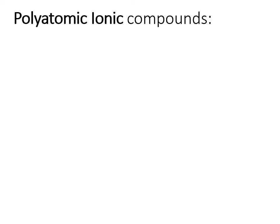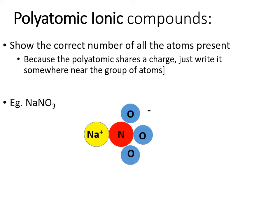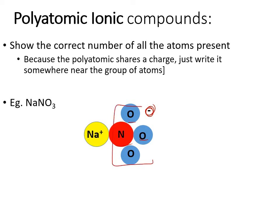For polyatomic ions, it's a good idea to show multiples of them because they are ionic. You want to get across the fact that you have the cation and the anion, where the anion itself is like a group — show the different atoms in there, but show them connected together and include the charge somewhere near them. We won't get into proper shapes because we're really just trying to keep track of numbers of atoms with these diagrams.